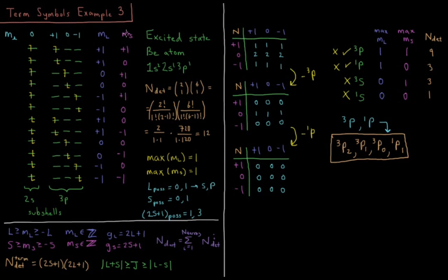M sub capital S is the sum of M sub S for each electron. A spin-up electron is plus 1 half, a spin-down electron is minus 1 half. So we have 1 half plus 1 half is 1, 1 half minus 1 half is 0. Minus 1 half plus 1 half is 0, minus 1 half minus 1 half is minus 1, until we have all 12 for both values.